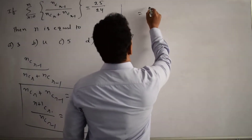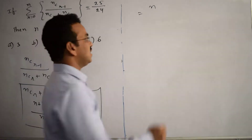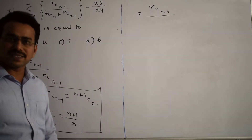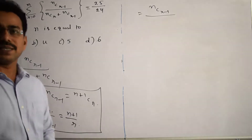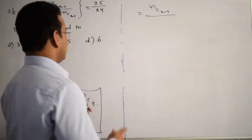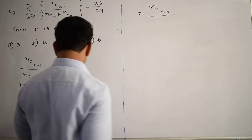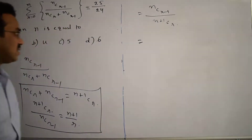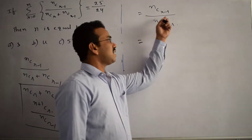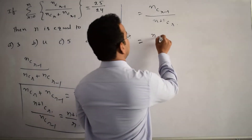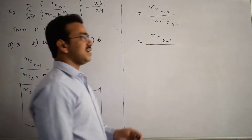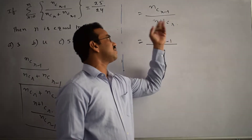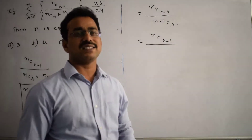The numerator is NCR-1. The denominator is NCR + NCR-1, which by the first formula equals N+1CR. So we have NCR-1 divided by N+1CR. If we can express N+1CR in terms of NCR-1, then both will cancel.